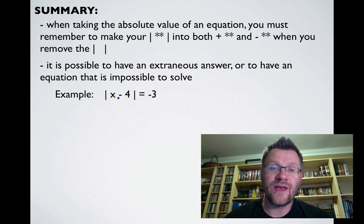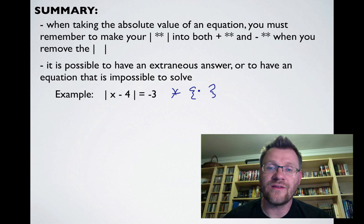For example, |x - 4| = -3 is impossible because you can't take the absolute value of something and get a negative answer. In this case, there are no answers—you would write it as an empty set or just say no answers.